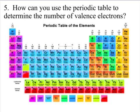So group one has one. For example, like hydrogen, 1s1, only one valence electron. Lithium, 1s2 2s1, one valence electron. Sodium, 1s2 2s2 2p6 3s1, one valence. All these have one valence.